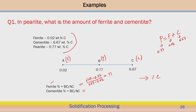Similarly, the cementite percentage is calculated using AB divided by AC. AB equals 0.77 minus 0.028, divided by 6.67 minus 0.028. From this we can calculate the fraction of cementite present. By applying the lever rule we can easily estimate the relative percentage of each phase in a particular composition consisting of two phases — ferrite and cementite in this case.